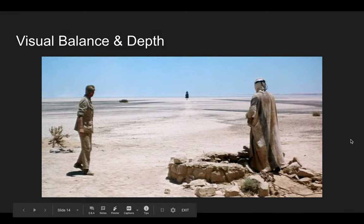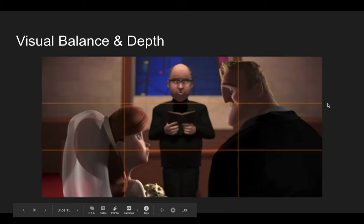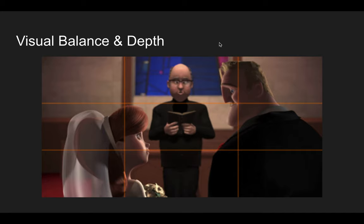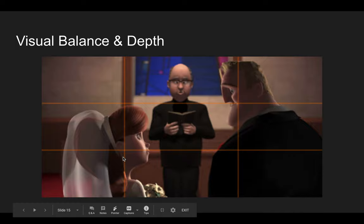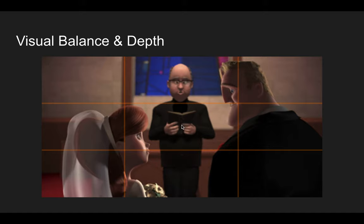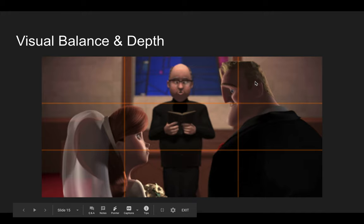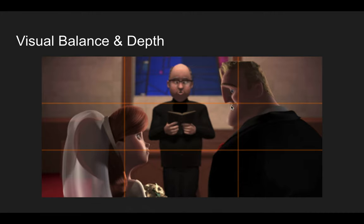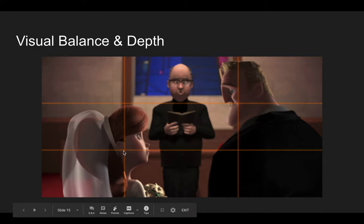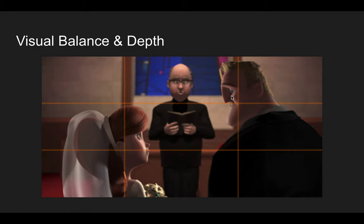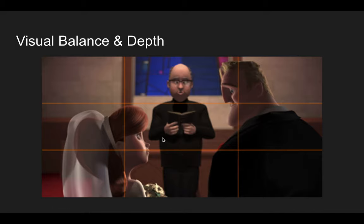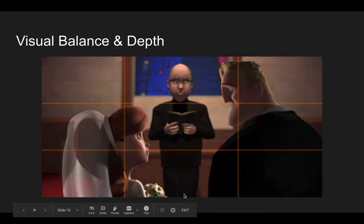Here's another shot from The Incredibles showing balance from foreground to middle ground. The two main characters at their wedding are in the foreground, the priest in the middle ground between them. We also get horizontal balance — Mr. Incredible in the upper right, Elastigirl in the lower left — with their eye lines connected, crossing over the priest and his book, creating a nice diagonal flow and balance across the frame as well as across the visual planes.